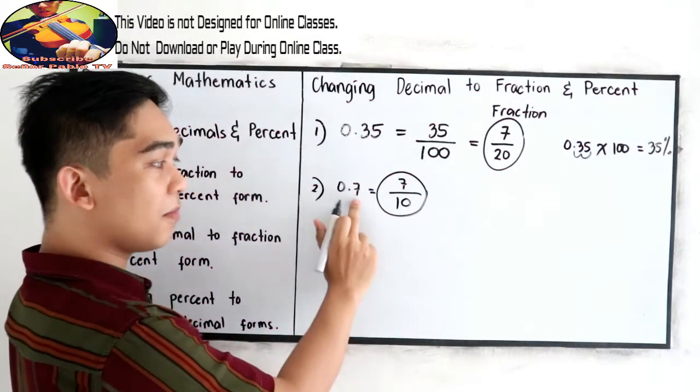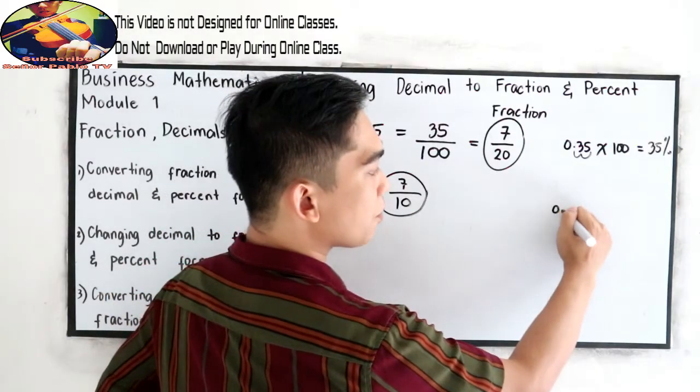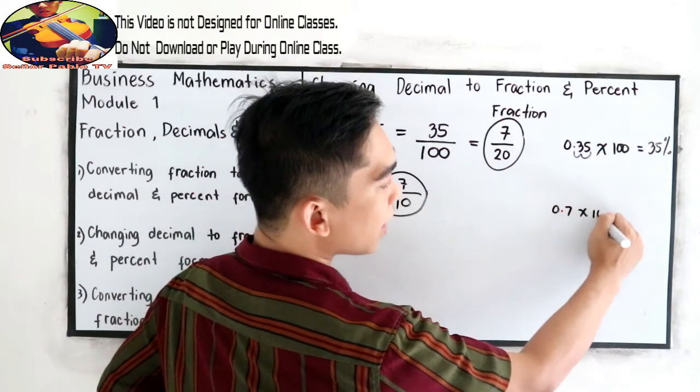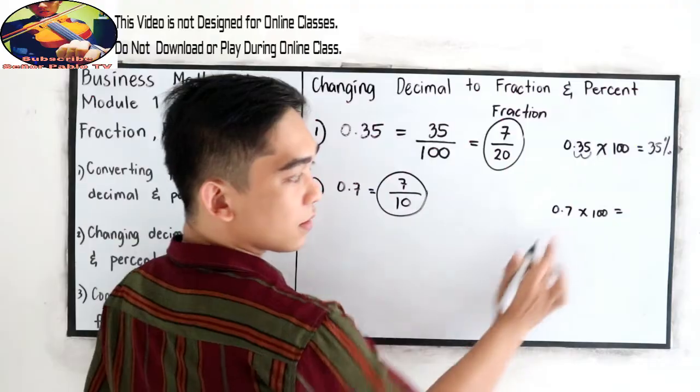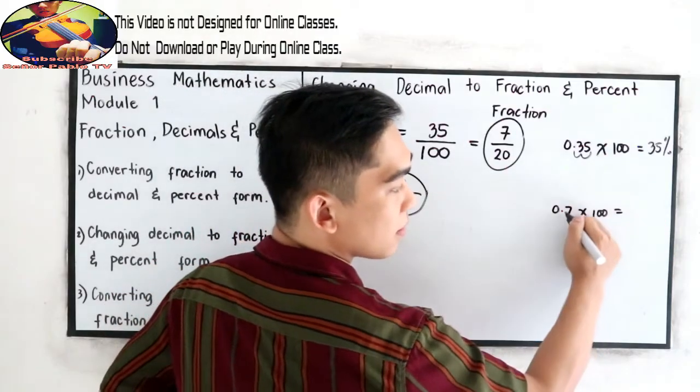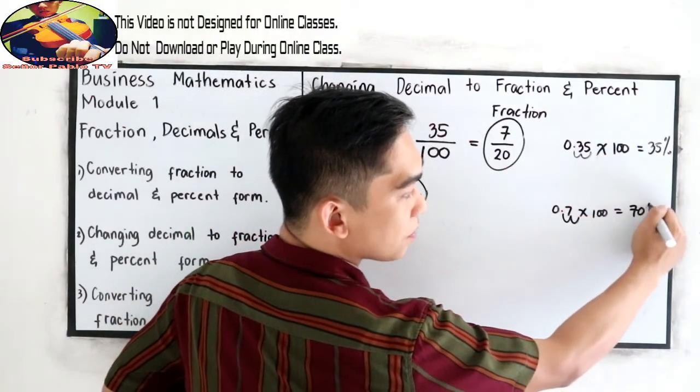So this is now our fraction form. And in decimal, this is 0.7 times 100, so that is, move two decimal on the right, 70 percent.